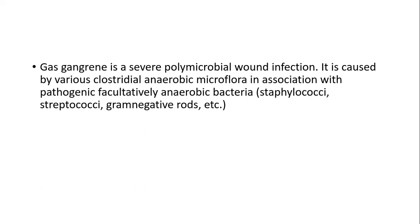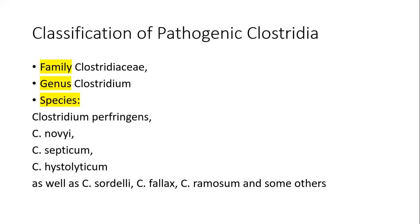Gas gangrene is a classical wound infection with a lot of pus and necrosis. Necrosis is the main feature of gas gangrene. Bacteria that cause gas gangrene produce a lot of gas in their metabolism, and this gas is kept in the necrotic tissue. This process is associated with facultative anaerobic bacteria like staphylococci, which help anaerobic bacteria by reducing oxygen, allowing clostridium to multiply.